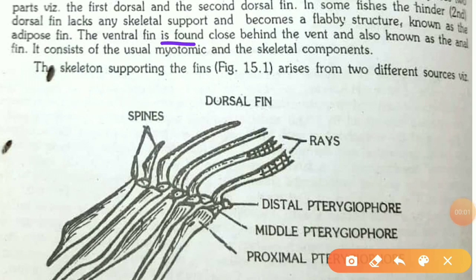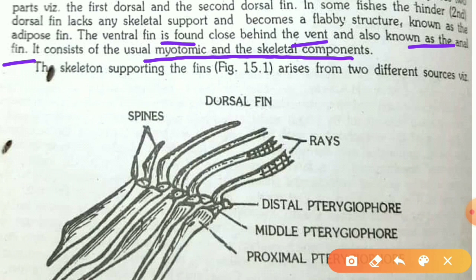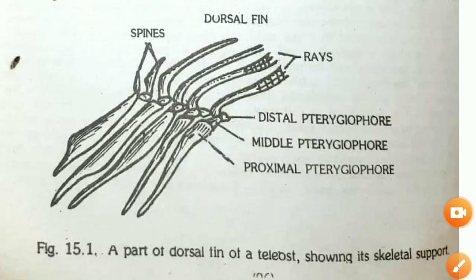The ventral fin is found close behind the vent and is also known as the anal fin because it is present near the anus. It consists of the usual myotomic and skeletal components.